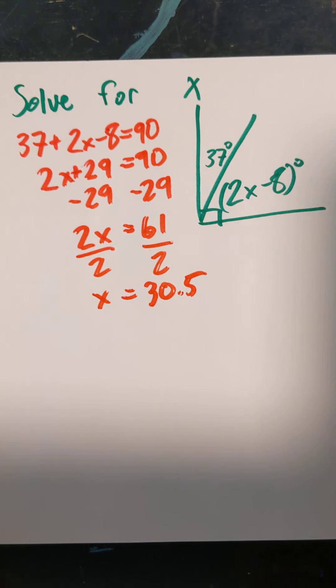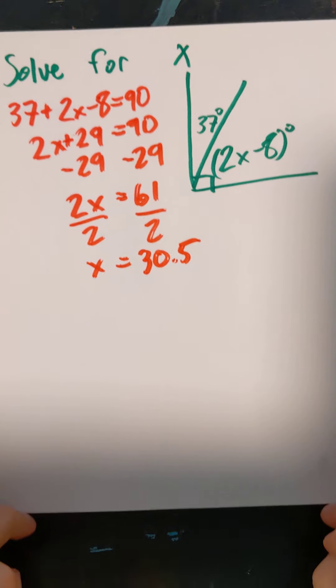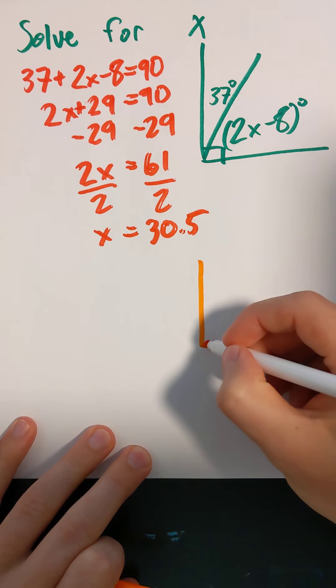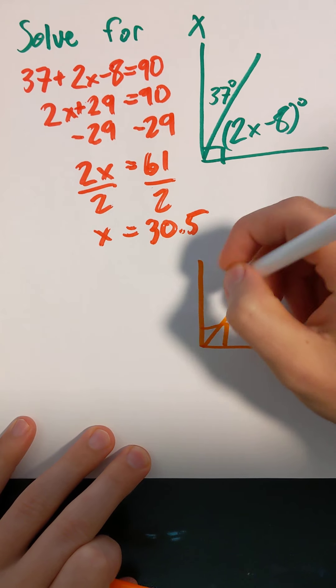What if we went a little more advanced? Let's say we were given this situation. Still got a right angle here.